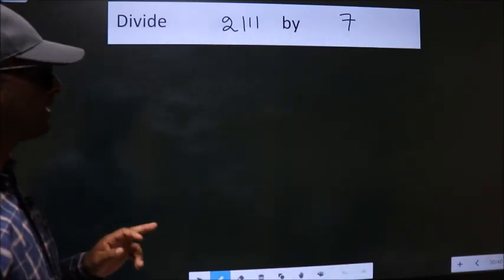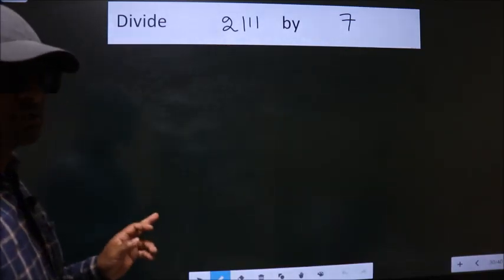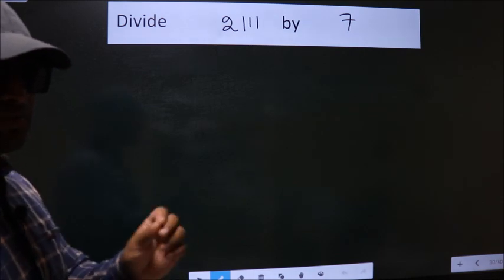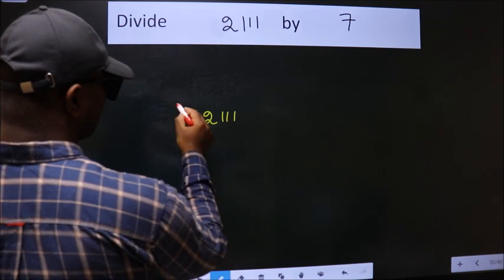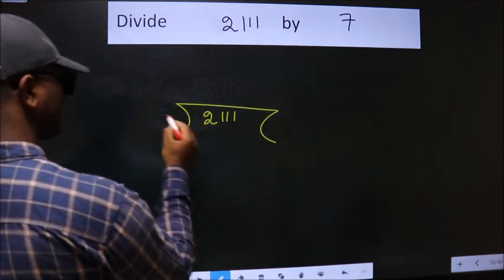Divide 2 triple 1 by 7. To do this division, we should frame it in this way. 2 triple 1 here, 7 here.